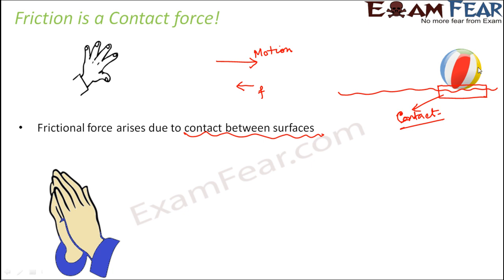Just take your palms and try to rub them together for a few seconds — maybe a minute or so. You will feel that your hands become warm. Why? Because when you rub them against each other, the frictional force is acting — the two surfaces, your two palms, are in contact. The force of friction comes into picture, and friction produces heat. Due to the production of heat, you feel the warmth when you rub your hands against each other.